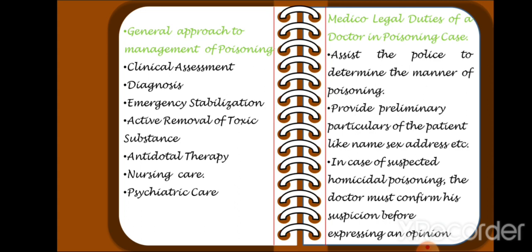The next point is nursing care and psychiatric care. A person under the influence of a poison should be given good nursing care, which is the backbone of good patient care, especially for comatose and incapacitated patients. There is also a need for psychiatric care in cases of suicidal poisoning, to avoid further attempts.